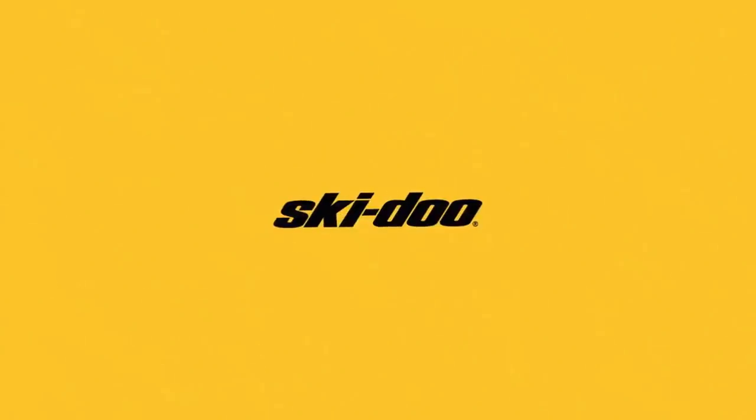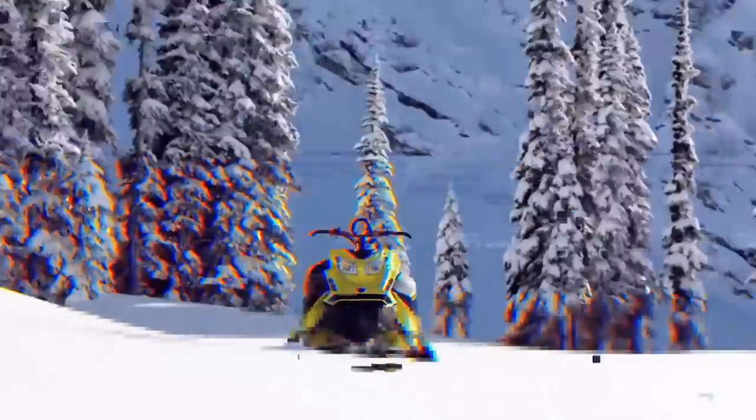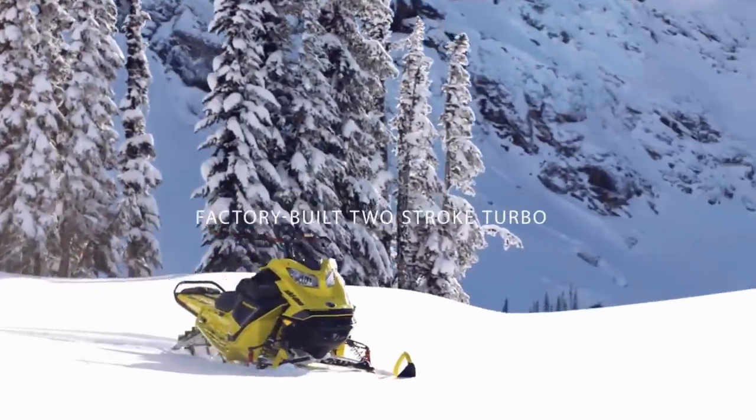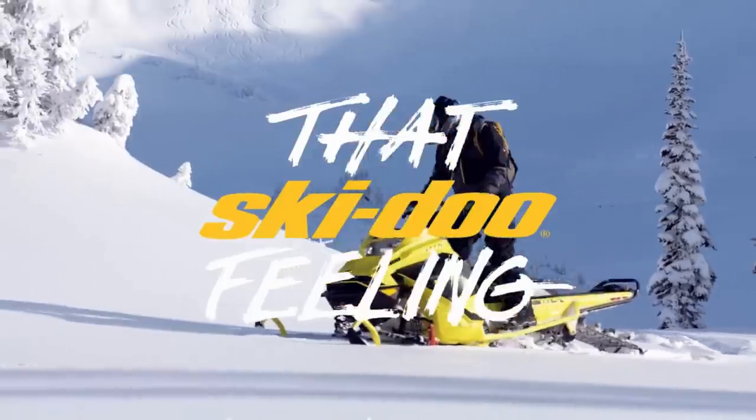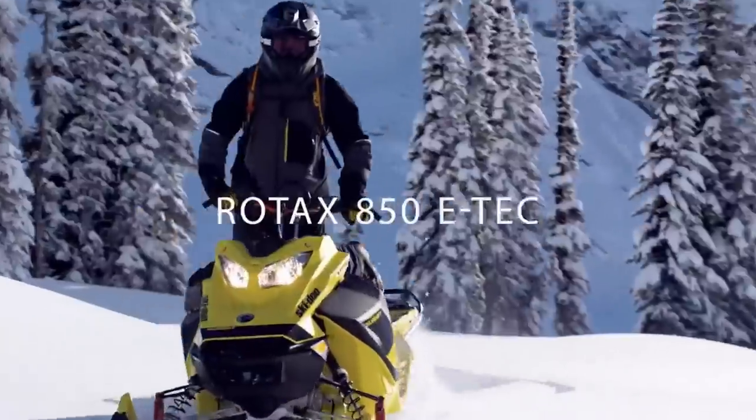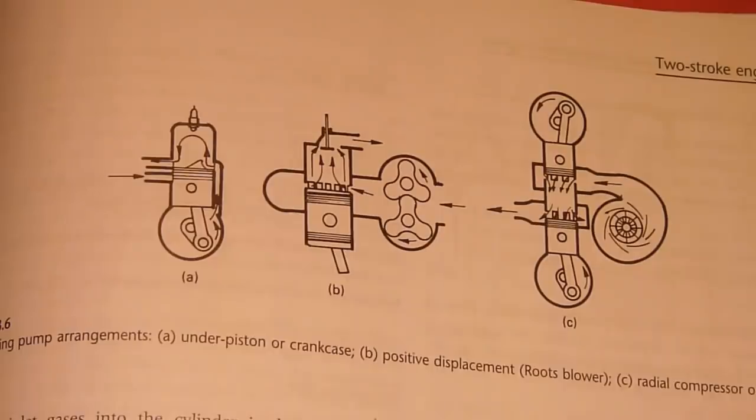Ski-Doo has changed the snowmobile industry again, introducing the first ever factory-built two-stroke turbocharged engine, the Rotax 850 E-Tech Turbo. Now I should recall that video was specifically about why supercharged crankcase induction two-strokes is pointless and counterproductive.